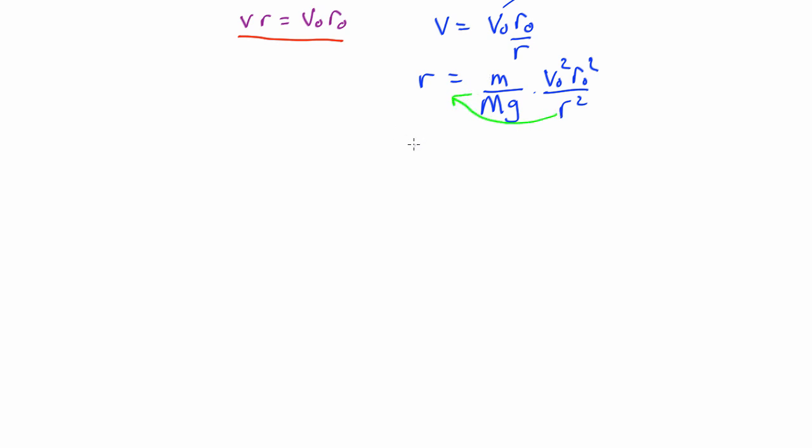So we end up with r cubed equals m over Mg times v0 squared r0 squared. So get rid of that and take the cube root here.